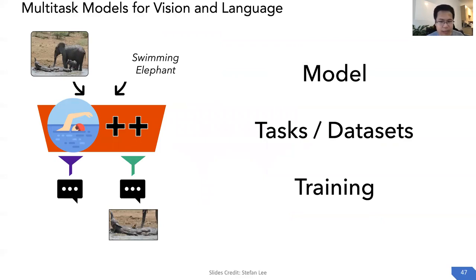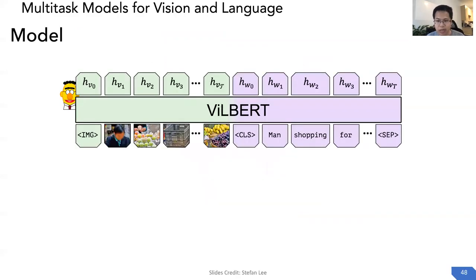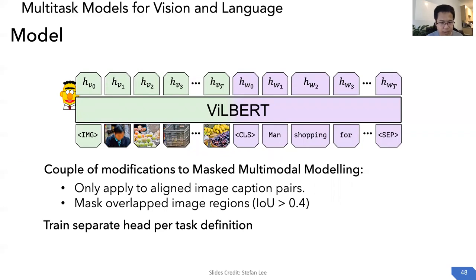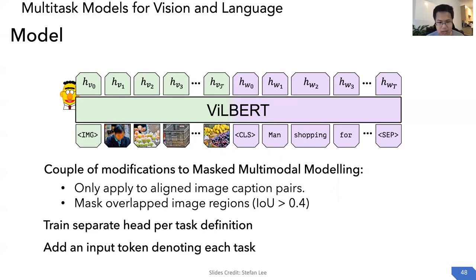We use the ViLBERT model from the first section with a couple of modifications. First, we only apply aligned image-caption pairs for masked multi-modal modeling, since non-aligned pairs introduce noise. We also mask overlapped image regions with IOU greater than 0.4 to remove information leakage. We train separate output heads per task to enable multi-task learning, and we add input tokens denoting each task, giving the model a better sense of which task is being queried.